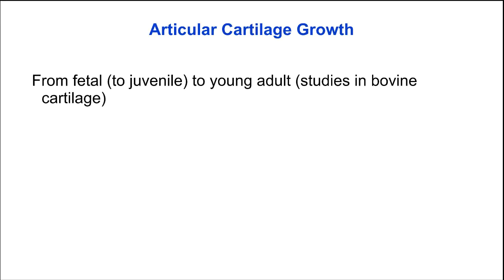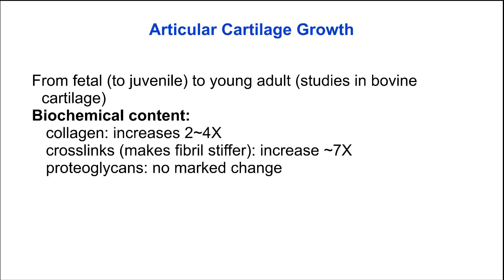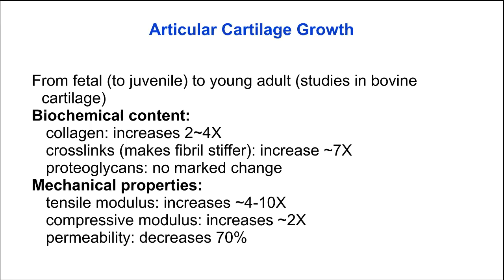As articular cartilage matures from fetus to adult, the biochemical content and mechanical properties change. The collagen content increases markedly by two to four-fold. Collagen crosslinks increase approximately seven-fold, making the tissue stiffer, but proteoglycans do not change markedly. Correspondingly, the tensile modulus increases four to ten-fold, the compressive modulus increases about two-fold, and cartilage permeability decreases about 70% as the porosity decreases.